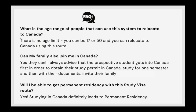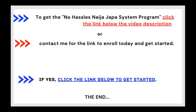Before we wrap up, here are some frequently asked questions. What is the age range of people that can use this system? There is no age range — you can be 17 or 50 and still relocate to Canada via the study route. Can my family join me in Canada? Yes they can, as already explained. Will I be able to get permanent residency with this study visa route? Yes — studying in Canada definitely leads to permanent residency.